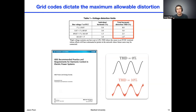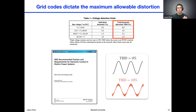There are grid codes that dictate the maximum allowable distortion that the utility will tolerate. A commonly used specification is IEEE 519 — the latest revision was from 2014. For these low voltage networks below 1,000 volts, the maximum allowable THD is 8%, which is already quite interesting in that we saw 8% THD can already cause some of these stability issues.